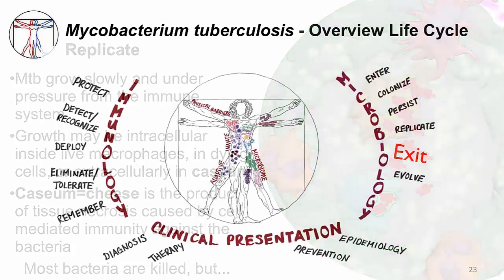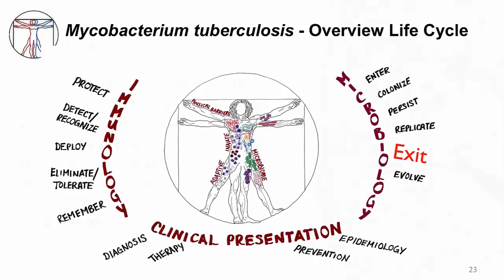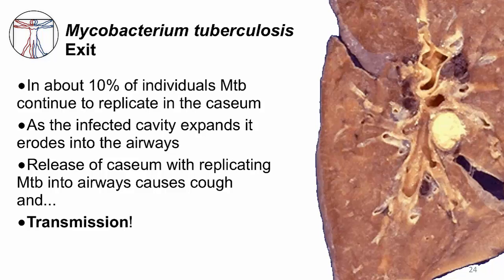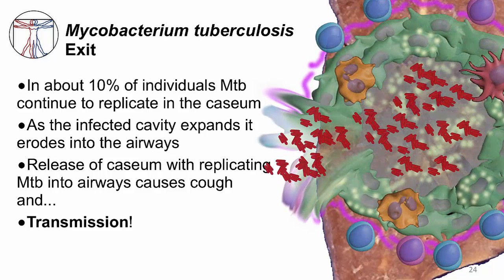The next step is EXIT. In about 10% of MTB-infected people, the bacilli continue to replicate in the caseum. As the infected cavity expands, it erodes into the airway. Ironically, a robust immune response is required for this tissue destruction. Here's an image of a pathology specimen of a person who died from pulmonary tuberculosis — you can see the cavity in yellow filled with a cheesy material and eroding into one of the airways. The erosion enables release of MTB-filled caseum into the airway, causing productive cough, and thus allowing MTB to exit the host. MTB can then transmit to another host, fulfilling its life cycle.